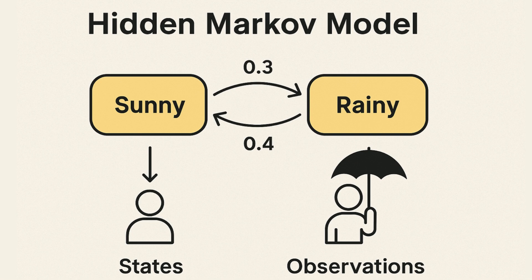Let's break down hidden Markov models, or HMMs, in a simple and visual way. Imagine this: you're indoors and trying to figure out the weather outside, but you can't look out the window. Instead, you observe what people around you are doing.